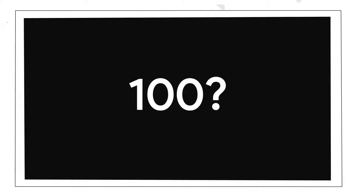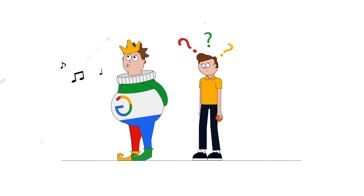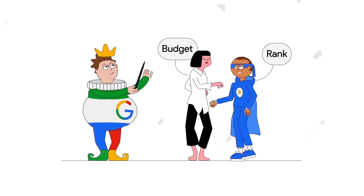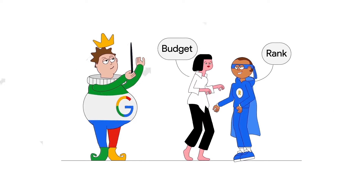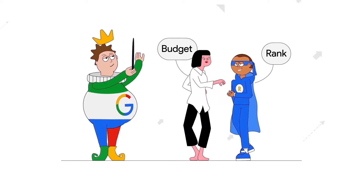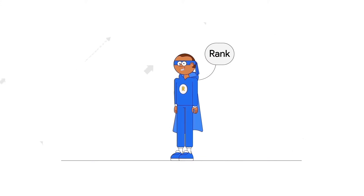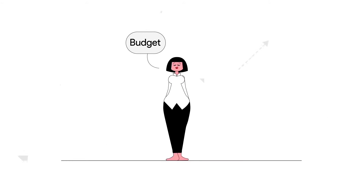Where did the other 53 percent go? Why are your ads not getting the entire 100 percent they deserve? Well, there's actually a different culprit hiding inside the Google algorithm — actually two. You're either losing impressions to rank or to budget, or it could be both. And Google has a nice name for both: if you're losing to rank it's called Search Lost IS Rank, and if you're losing to budget it's called Search Lost IS Budget.